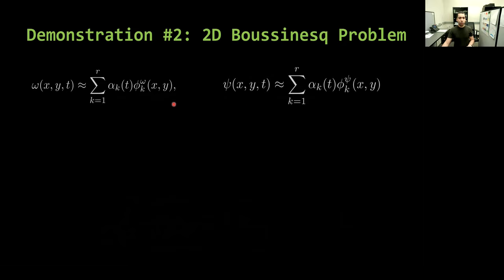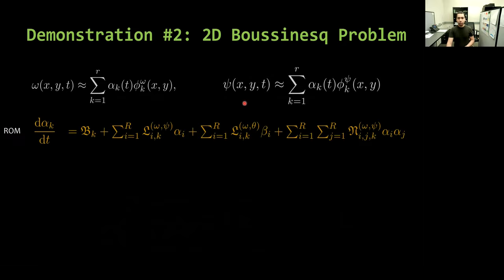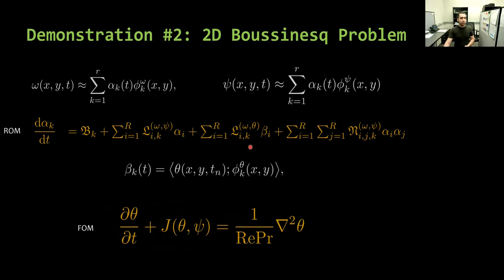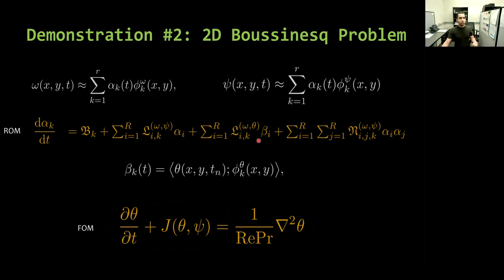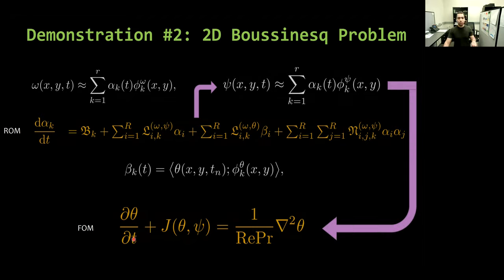Here we use this ROM approximation for omega and psi, and build a Galerkin ROM for the coefficient alpha. Here beta is the contribution of the temperature in the vorticity equation. And finally, we have the FOM equation for the temperature. In this framework, we first solve the ROM for one time step. Then we approximate psi using this relation. This psi is required to evolve the FOM equation one more time step. After we evolve the FOM to compute theta, we update beta. And again, this beta is used in the ROM. So we repeat this procedure until the final time. And you can see here we have two-way coupling in this problem. Because the ROM and FOM need to communicate and take information from each other at every time step.